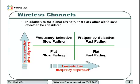Doppler shift occurs when the transmitter or receiver — or both — are moving relative to each other. This shift in frequency can cause significant problems if the transmission technique is sensitive to carrier frequency offsets. Using the relationship between Doppler shift and coherence time, we can determine if the channel undergoes fast or slow fading.